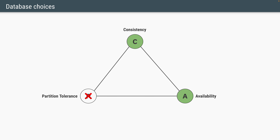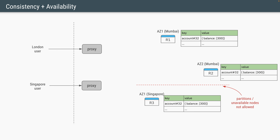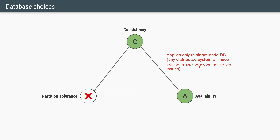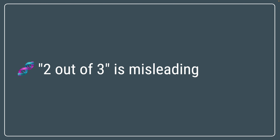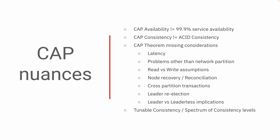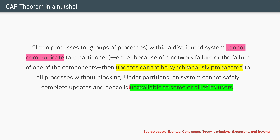The last combination is where a database chooses consistency and availability but does not allow a network partition. In this case, the network partition itself is not allowed, but in distributed systems with commodity hardware it is very difficult to achieve this. That is why this combination only applies to a single node database, where distributed communication is not required and conceptually there is no network partition. Before closing, be aware that CAP theorem is very simplistic in nature — it overlooks a lot of data points. Don't think about it only as 'two out of three'. There are many nuances which CAP theorem doesn't take into consideration, all applicable in modern NoSQL as well as new SQL databases. This is CAP theorem in a nutshell — if you understand this, you've understood the full CAP theorem. Thanks for watching and see you in the next one.